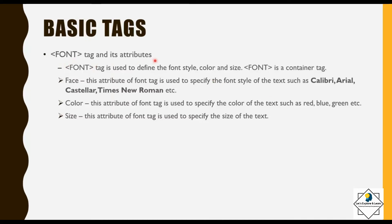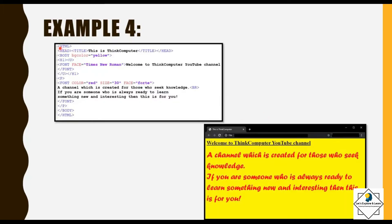Now let us discuss the font tag and its attributes. The font tag is used to define font style, color, and size; it is a container tag with three attributes. The face attribute specifies the font style such as Calibri, Arial, or Times New Roman. The color attribute specifies the color of the text such as red or blue. The size attribute specifies the size of the text. In Example 4, for the heading I have written font face equal to Times New Roman. For the paragraph I have written font color equal to red, size equal to 30, face equal to 40. In the output you can see the paragraph is displayed in red, size 30, with that face.